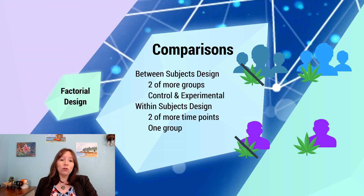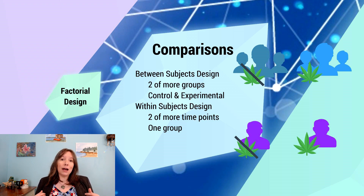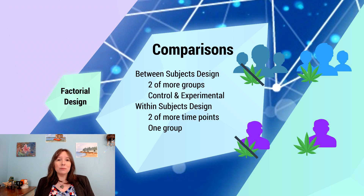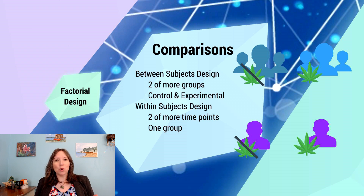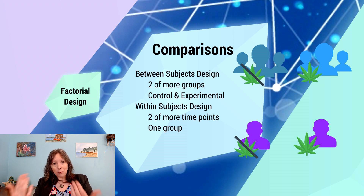A between-subjects design is when you're looking at two or more groups of participants. If we want to look at cannabis usage and driving, we would have two groups: one group driving without the influence of cannabis, and another driving under the influence. For safety, let's say we're using a driving simulator, so there's no actual risk. Some participants are given a dosage of cannabis and some are not, and we measure how many collisions they experience.